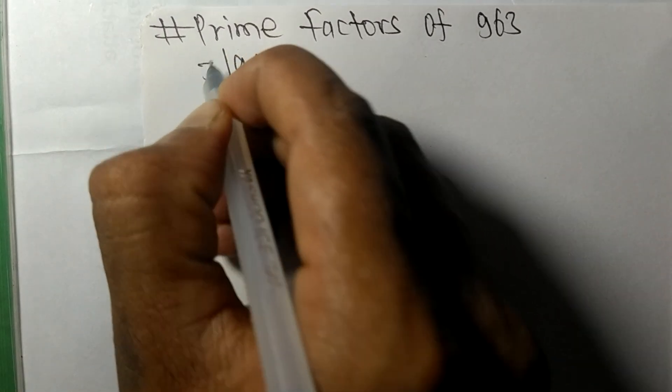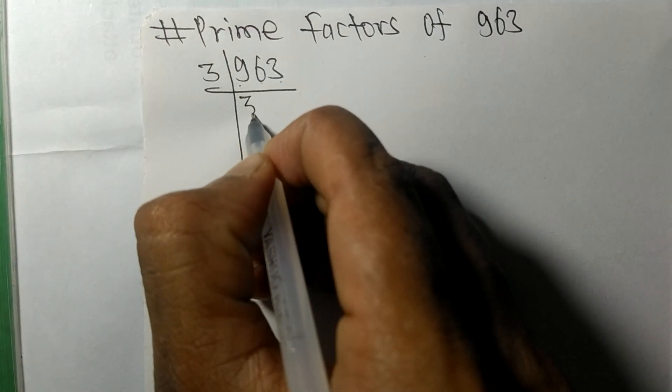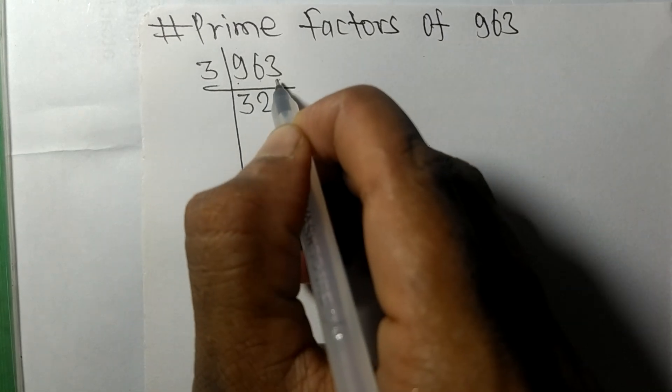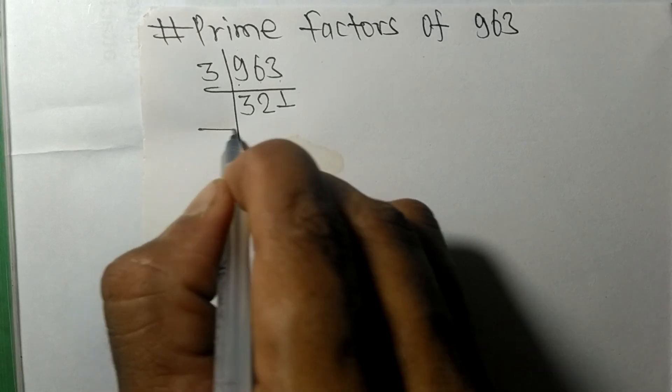by 3. 3 times 3 means 9, 3 times 2 means 6, 3 times 1 means 3. So now we